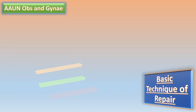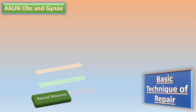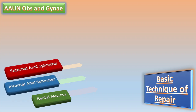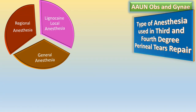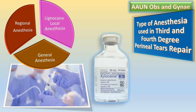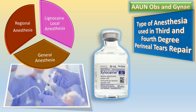The basic technique of repair of fourth degree laceration requires approximation of the rectal mucosa, internal anal sphincter, and external anal sphincter. Regarding anesthesia: if you cannot see all the edges of the tear, use either regional or general anesthesia. If you can see all the edges of the tear, use local infiltration with lignocaine.